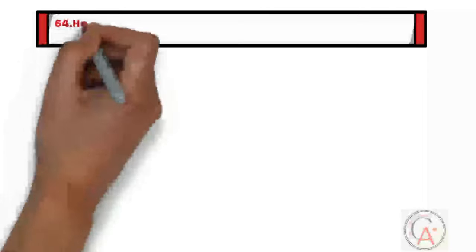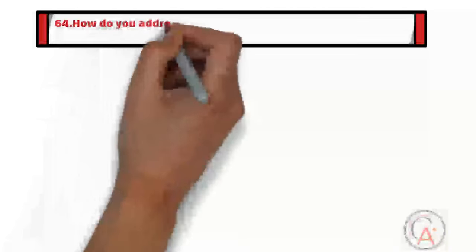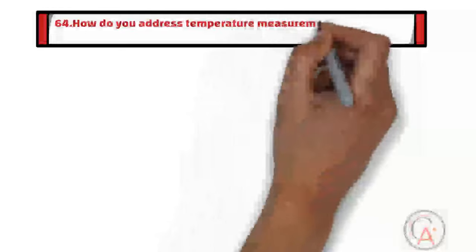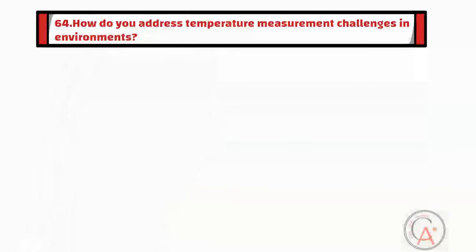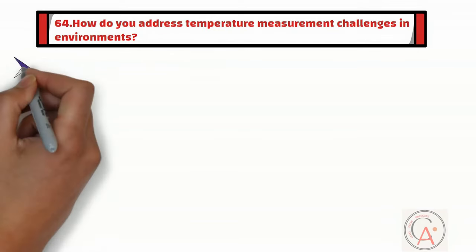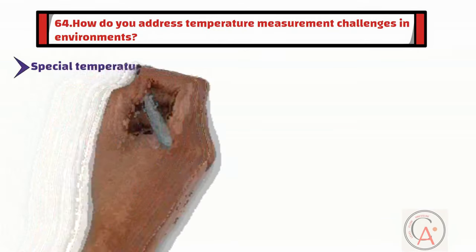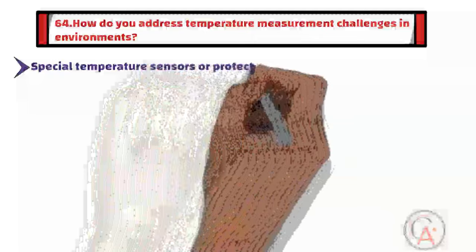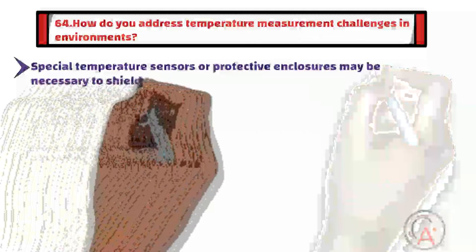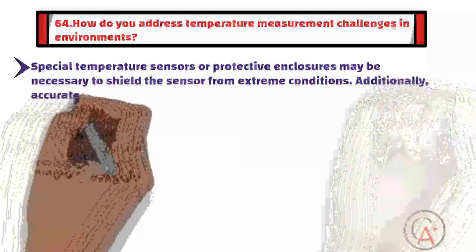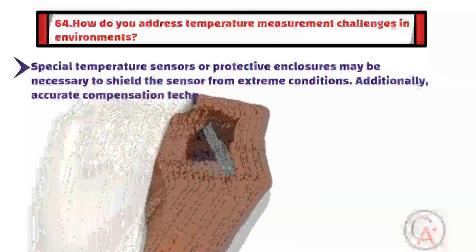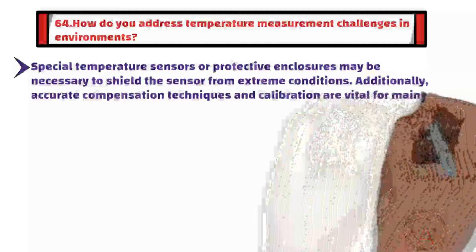Question sixty-four is: how do you address temperature measurement challenges in environments with extreme conditions such as high radiation or extreme cold? In such environments, special temperature sensors or protective enclosures may be necessary to shield the sensor from extreme conditions. Additionally, accurate compensation techniques and calibration are vital for maintaining measurement accuracy.